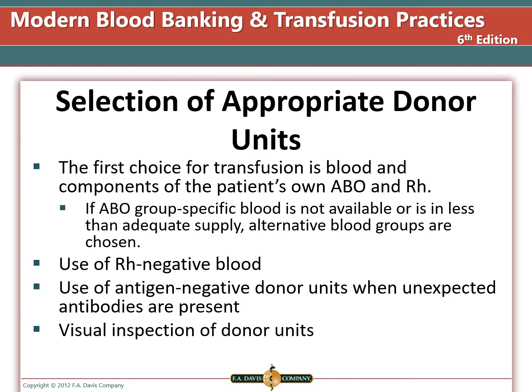The first choice for transfusion of blood is that of the patient's own ABO and RH. If ABO group-specific blood is not available or is in less than adequate supply, alternative blood groups are chosen. This might include using RH negative for RH positive patients.